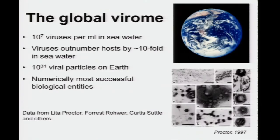The global virome is remarkable. In seawater, there are judged to be something like 10 to the 7th viral particles per milliliter. Viruses outnumber their hosts by a factor of something like 10 in seawater, and near the end I'll be arguing that that's probably true in gut also. Estimates multiplying this out, there's something like 10 to the 31st viral particles on Earth, making viruses numerically the most successful biological entities on the planet. This picture has been developed by Lita Proctor of HMP, Forrest Rohrer, Curtis Suttle, and many other workers.